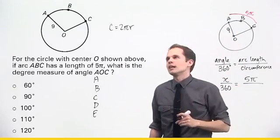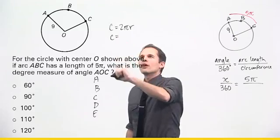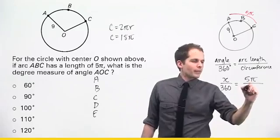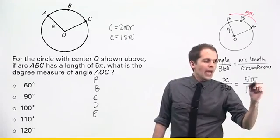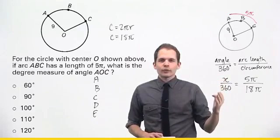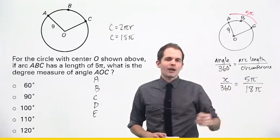The radius of this circle is 9. So when I put 9 in for r, I'll get 18π. So solving for the circumference will get me 18π. And now my formula has given me a basic proportion. X over 360 equals 5π over 18π.